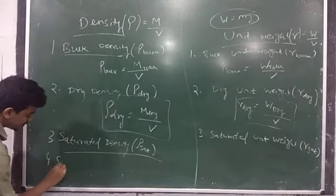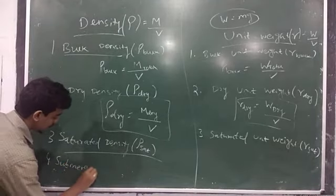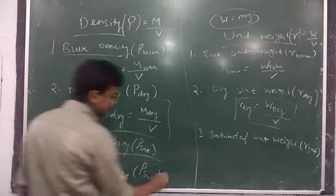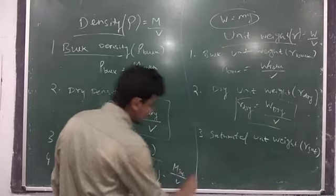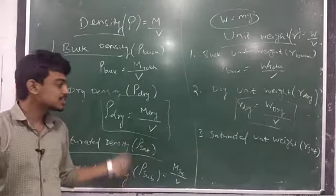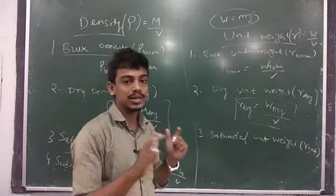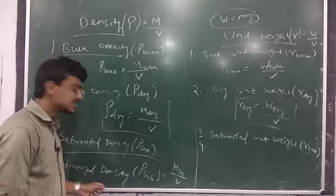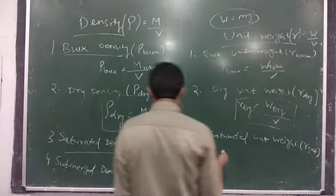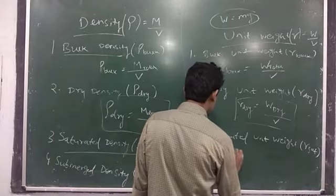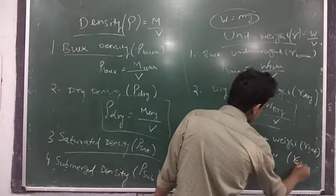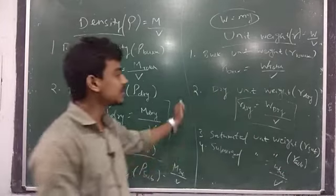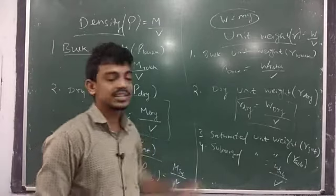The last type is submerged density, written as rho submerged. Submerged density means mass of the submerged body by total volume. Submerged density is also called buoyant density because of the buoyant force. Similarly, submerged unit weight, gamma submerged, equals weight of the submerged mass by volume. These formulas are for fundamental understanding; more important formulas follow.